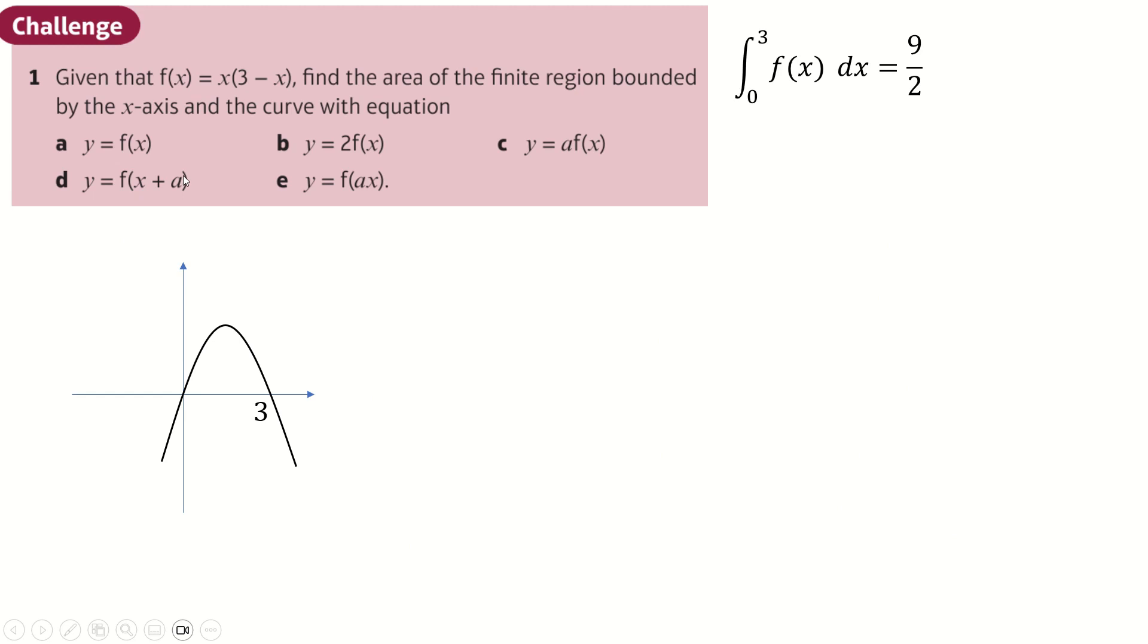D and e are slightly more interesting. So for d, you're moving this thing left a units. But of course, that doesn't actually matter. It's the integral, right? Because the integral is just this area above the x-axis here. That area is not changing when you move it left and right. So that answer is still 9 over 2.